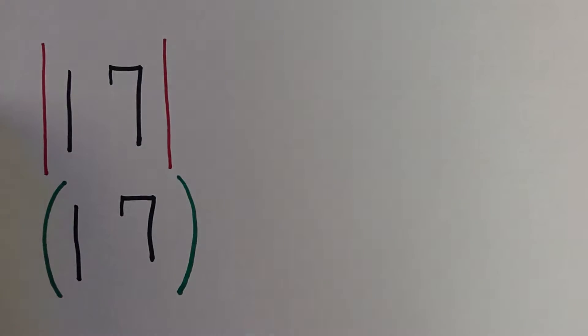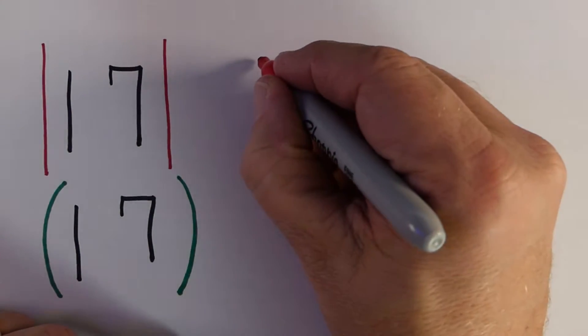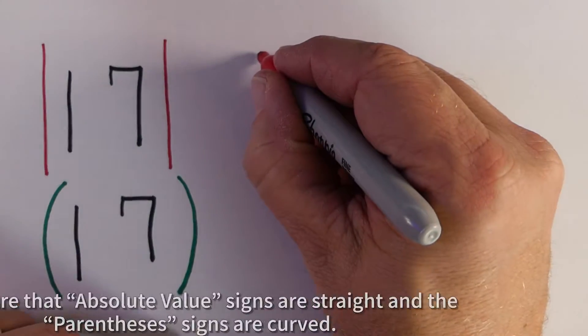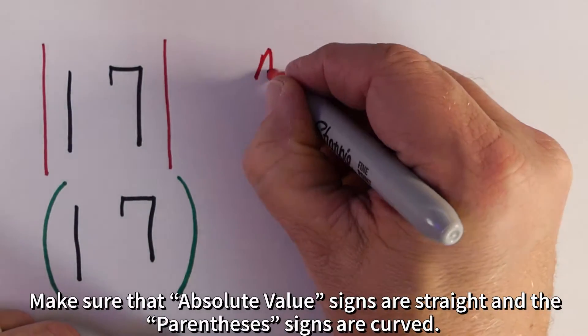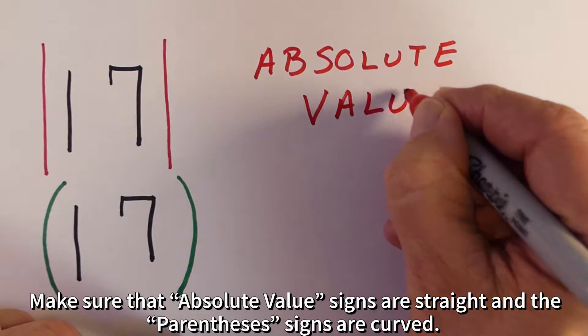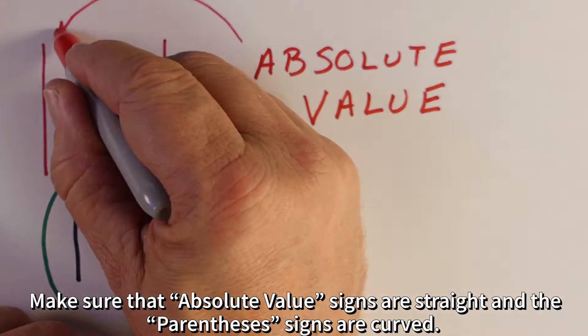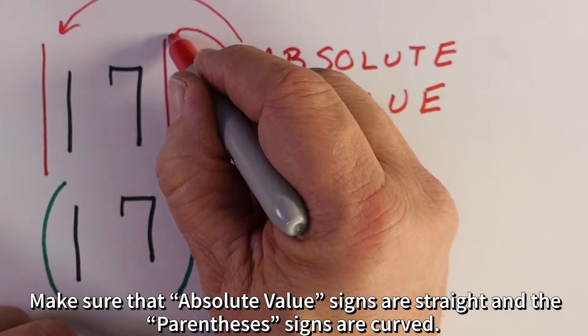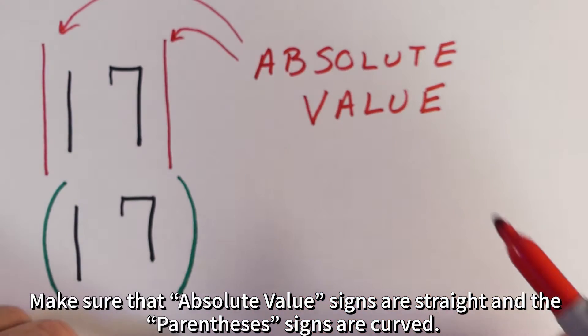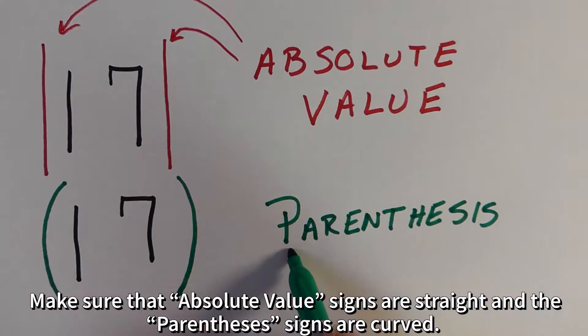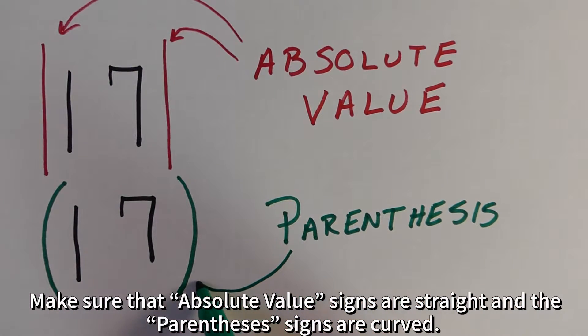Occasionally students will get confused between the absolute value and a parenthesis — sometimes teachers getting sloppy, sometimes kids just confused. So just a reminder: the absolute value has to have straight lines on each side, and the parentheses will have the curve lines on both sides.